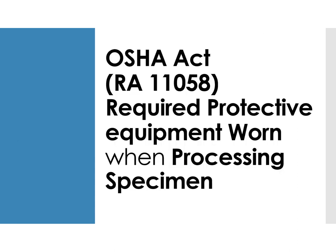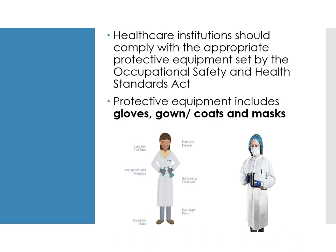Regarding OSHA Act or RA 11058 — the required protective equipment worn when processing specimens — healthcare institutions should comply with appropriate protective equipment standards set by occupational safety and health regulations. Protective equipment includes gloves, gown, coat, and mask. When in the laboratory, your PPE must always be complete — it is for your own protection against diseases and hazards that may be encountered in the laboratory.